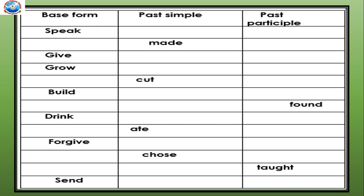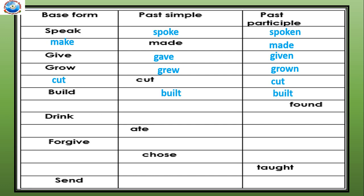First one: speak, spoke, spoken. For past simple made, its base verb is make, made. Give, gave, given. Grow, grew, grown. Cut — cut will remain the same as the base verb and same as past participle. Build, built, built. Now you see the past participle is found, so its verb will be find. Past simple: found, found.